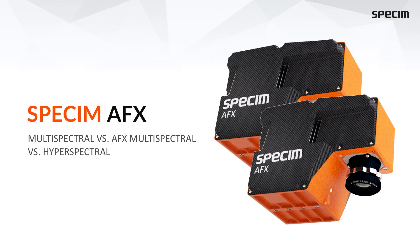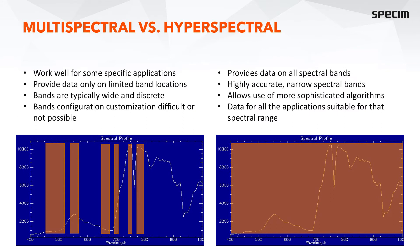Multispectral versus hyperspectral. The one on the left is a typical multispectral configuration where the bands are located on certain fixed discrete locations. The bands are relatively wide and you cannot customize the locations easily, certainly not before the missions. So these are good for some specific applications, but for others it's not easy to customize them.